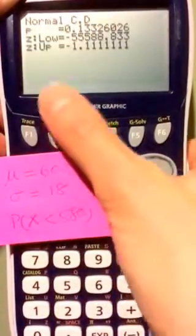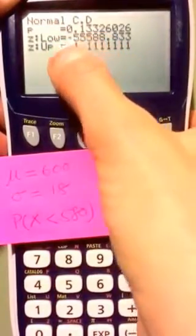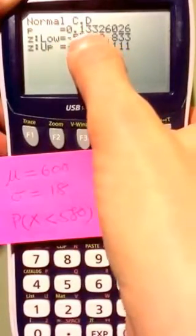Press enter and this right here is your probability. You can ignore this z low and z up. This is the probability that you want.